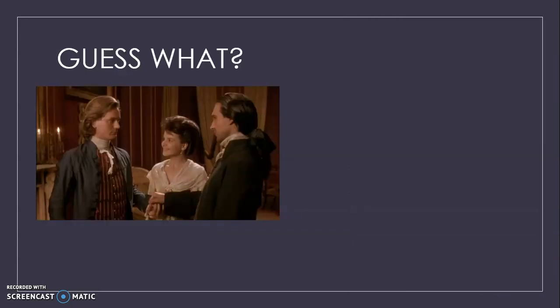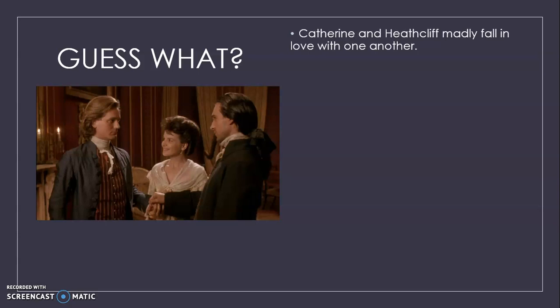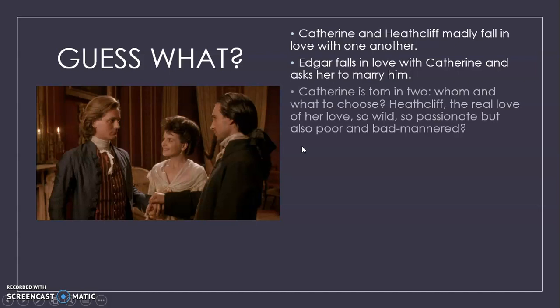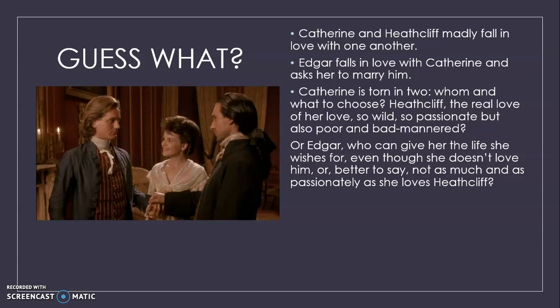This gives birth to a triangle because Catherine and Heathcliff madly fall in love with one another as soon as they become teenagers. At the same time, Edgar falls in love with Catherine and asks her to marry him. This creates a dilemma: Catherine is torn between Heathcliff, the real love of her life — so wild and passionate but also poor and bad-mannered — and Edgar, who is refined and calm and can give her the life she wants. The problem is that Catherine doesn't really love Edgar; she feels only affection for him, because the love of her life is Heathcliff.